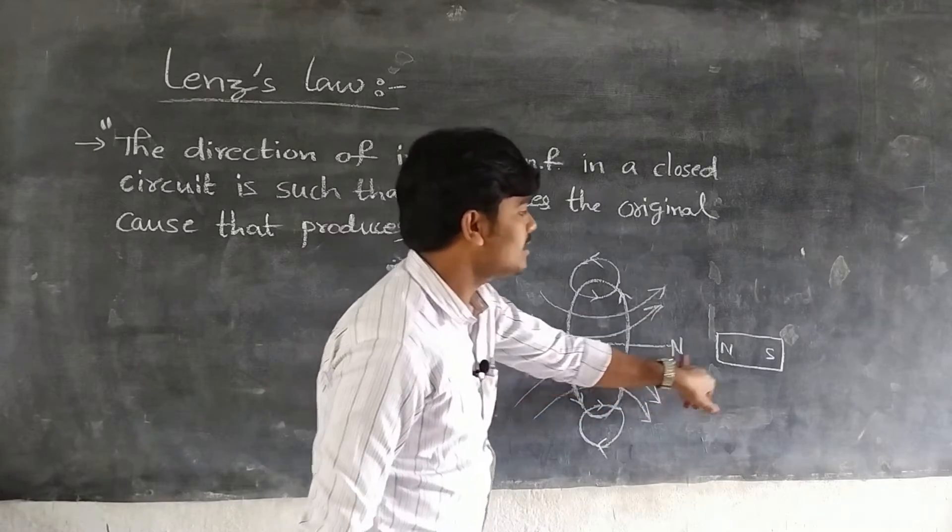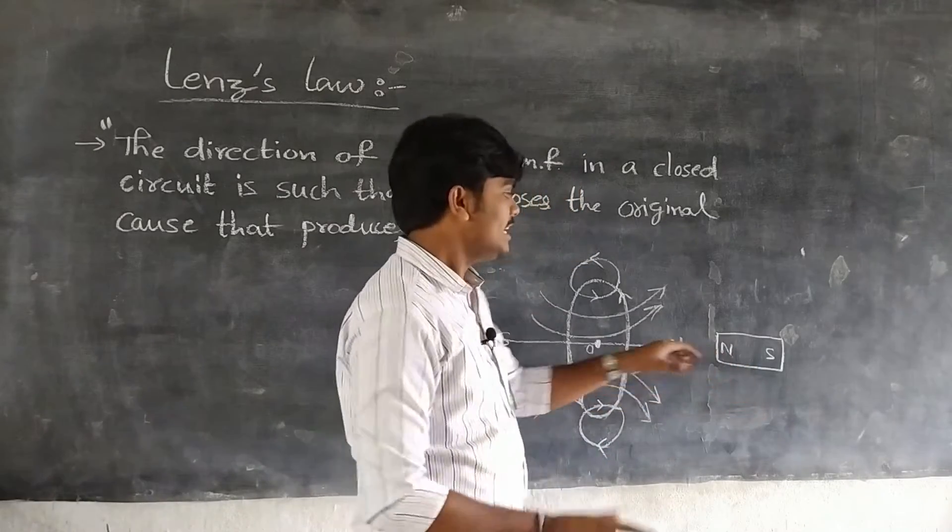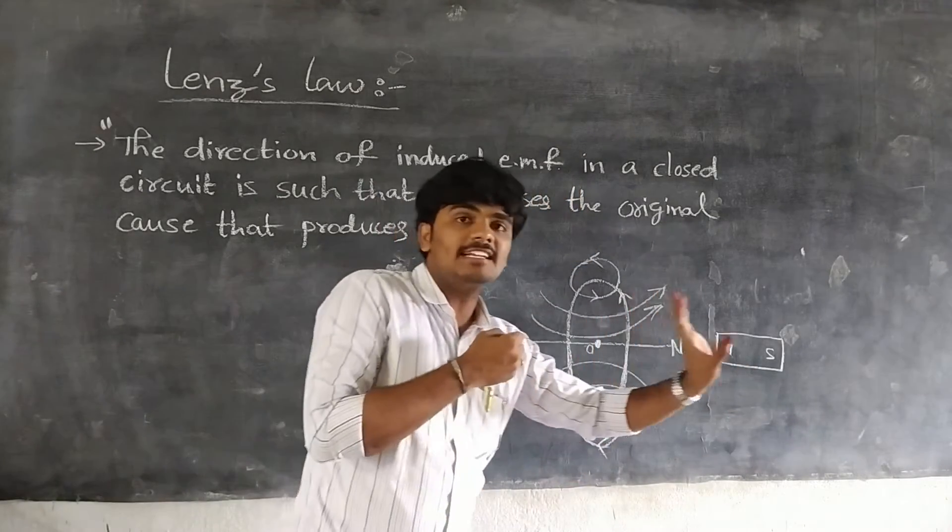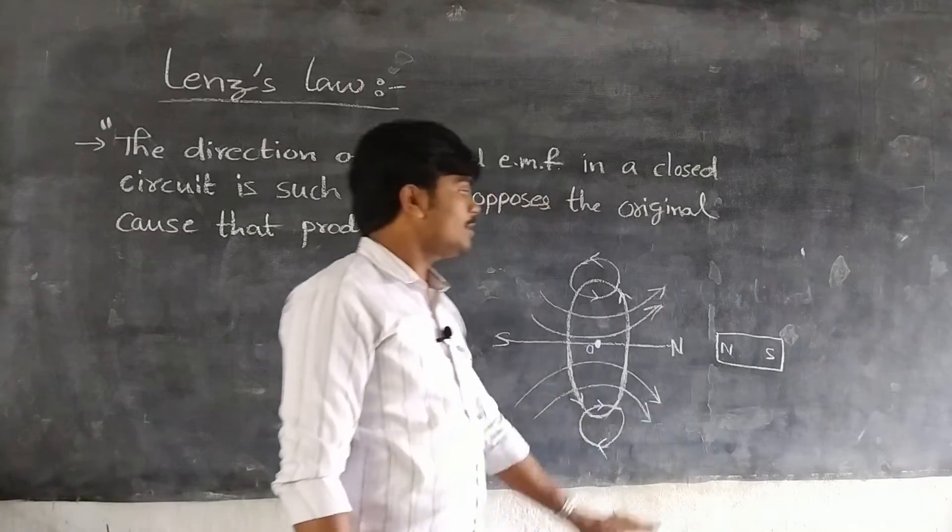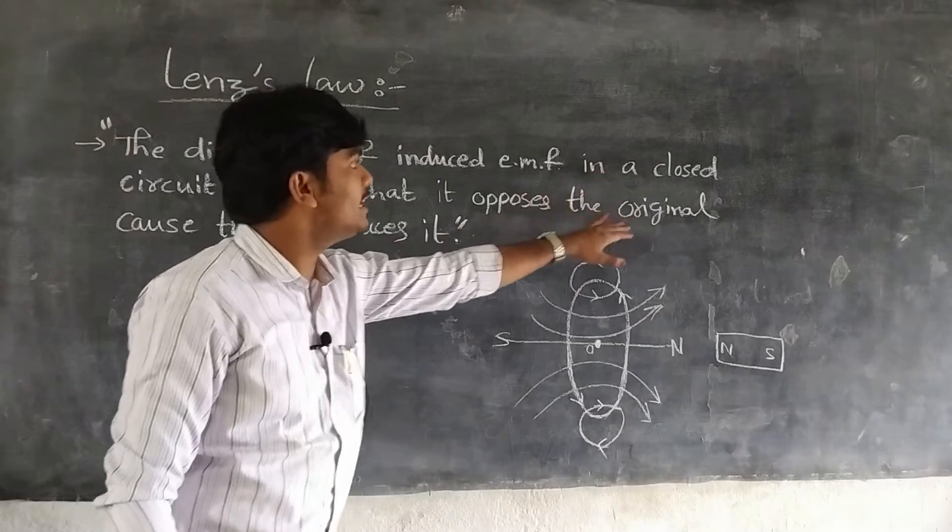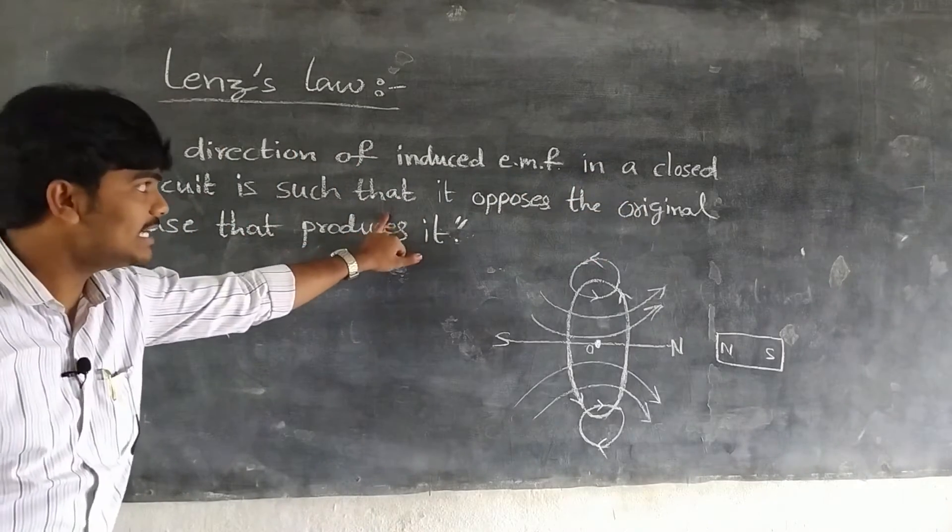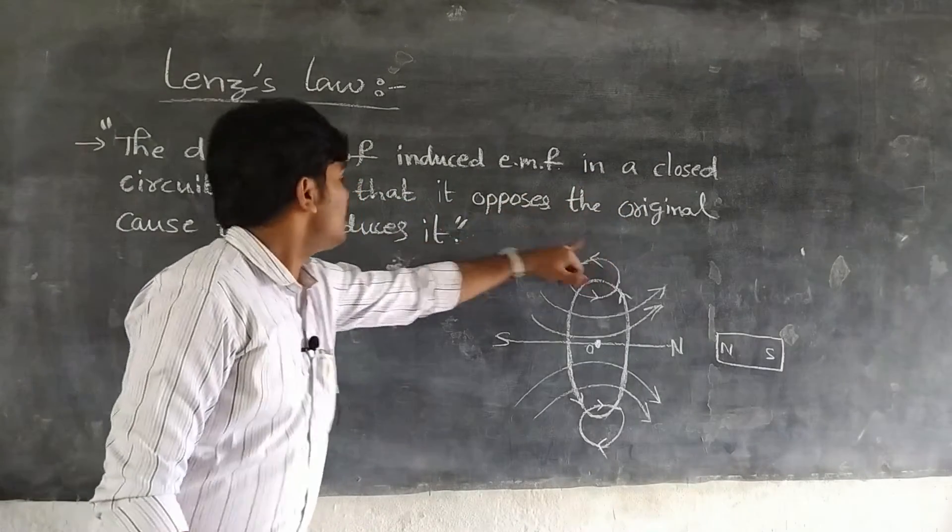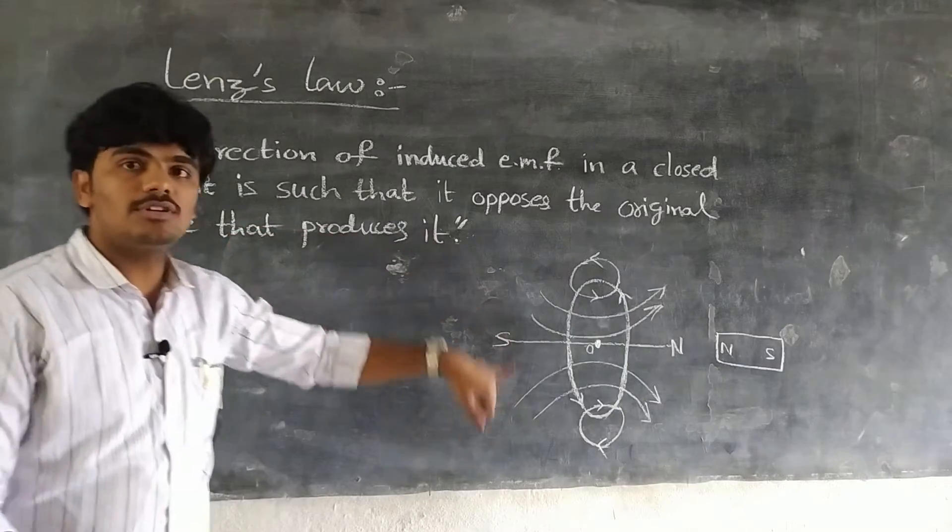So the direction of induced EMF in a closed circuit is such that it opposes the original cause that produces it.